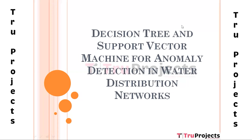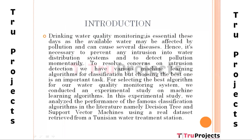In this video we are going to explain about the project that uses visionary and support vector machine for anomaly detection in water distribution networks. Water intended for human consumption must not contain dangerous chemicals or germs harmful to health. Therefore it is necessary to prevent any intrusion into the water distribution systems and to detect pollution as soon as possible, whether intentionally or accidentally.